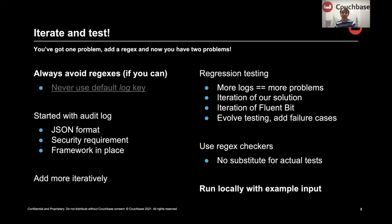I link out to my blog post, but if you make sure your regex doesn't include the default log key — which is what the tail plugin uses when it can't parse things — you can easily tell if your regex is failing to parse. FluentBit doesn't really show you if the regex fails to parse without looking at metrics. So for my regexes, I never have the log key in it — if I see that in the output, I know the regex has failed. I started with the audit log, the simple JSON one, so no regexes, a good first starting point. It also put the whole framework in place so I could iterate.